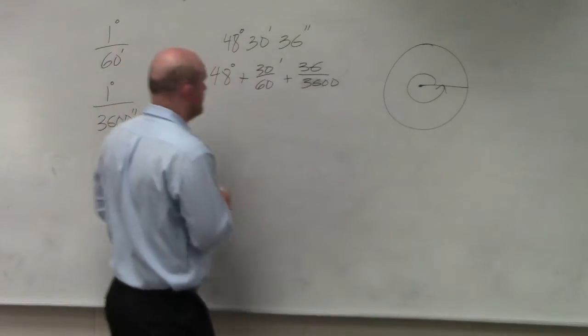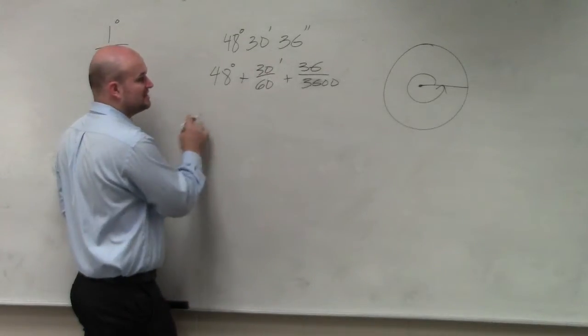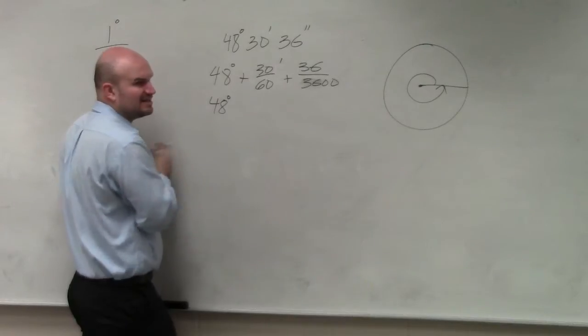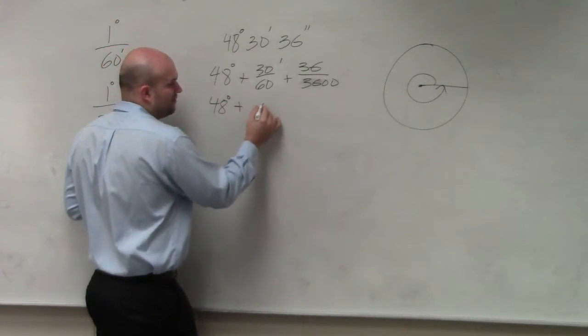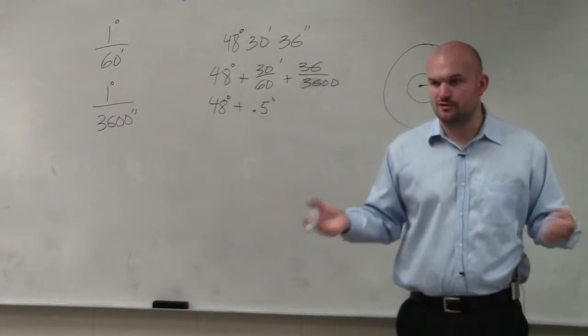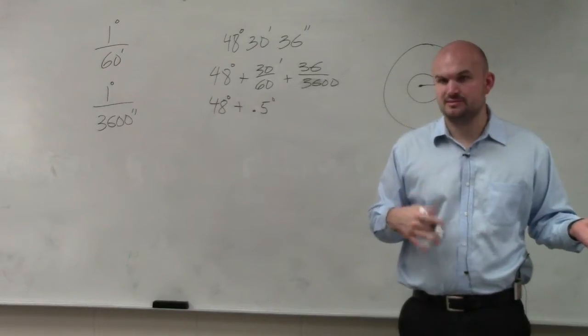0.01. Okay, that's what I thought. 1 over 100. So, now what we can do is we can convert these to decimals. So we have 48 degrees. Well, 30 out of 30 minutes, how can we rewrite that as basically a degree? That is 0.5 of a degree, right? Would you say that's like a half of a degree? 30 out of 60 minutes? Would you guys agree? 30 out of 60 minutes?